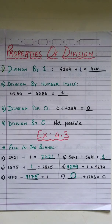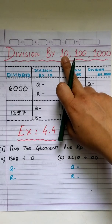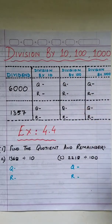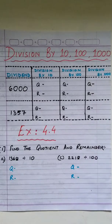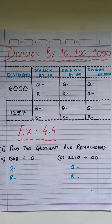Now you know how to apply these rules in your calculations to make them easier and faster. Let's learn about division by 10, 100, and 1,000. Trust me, this is really very easy and very quick.